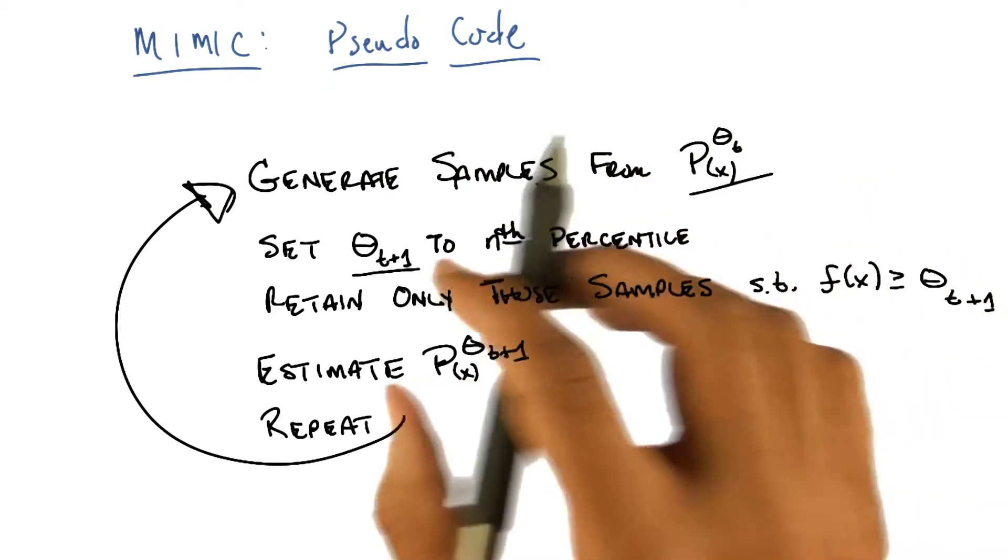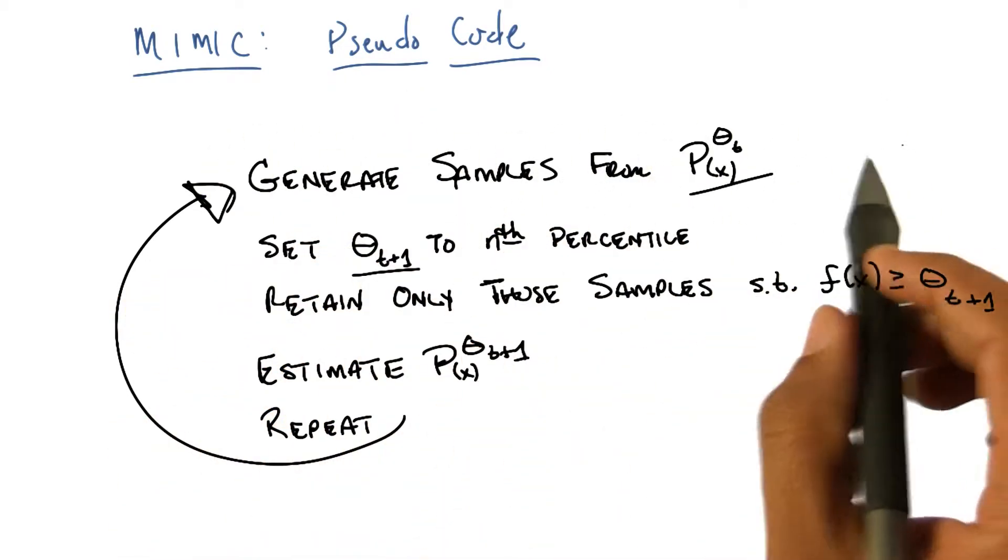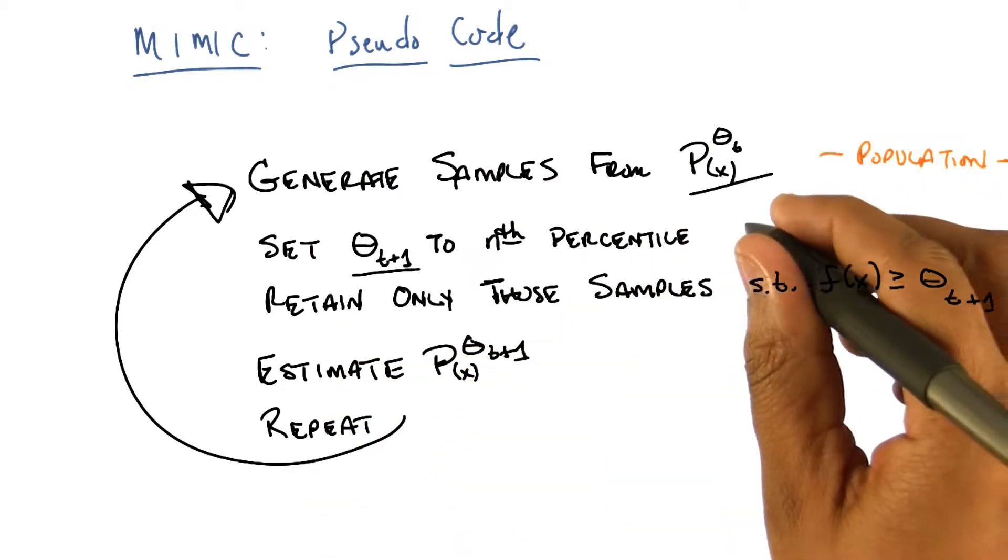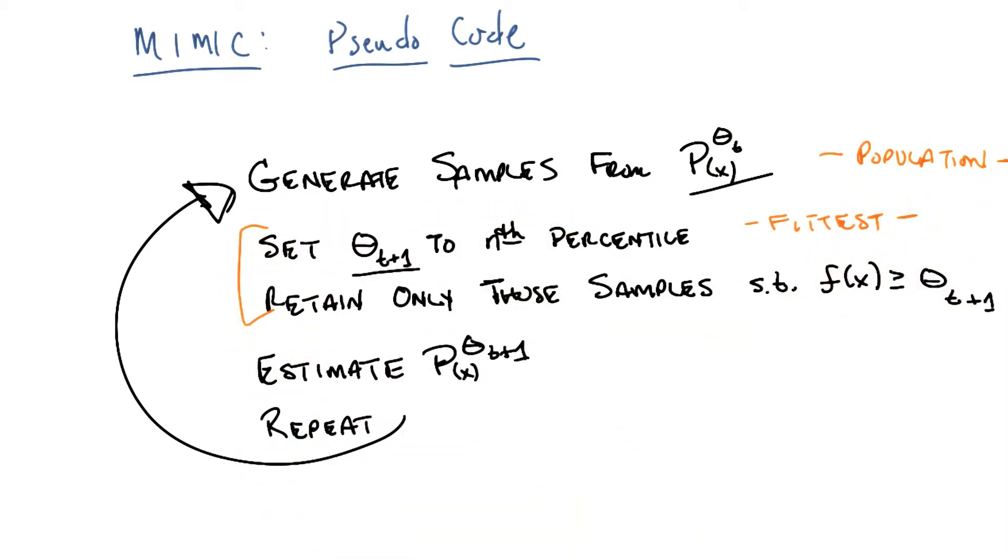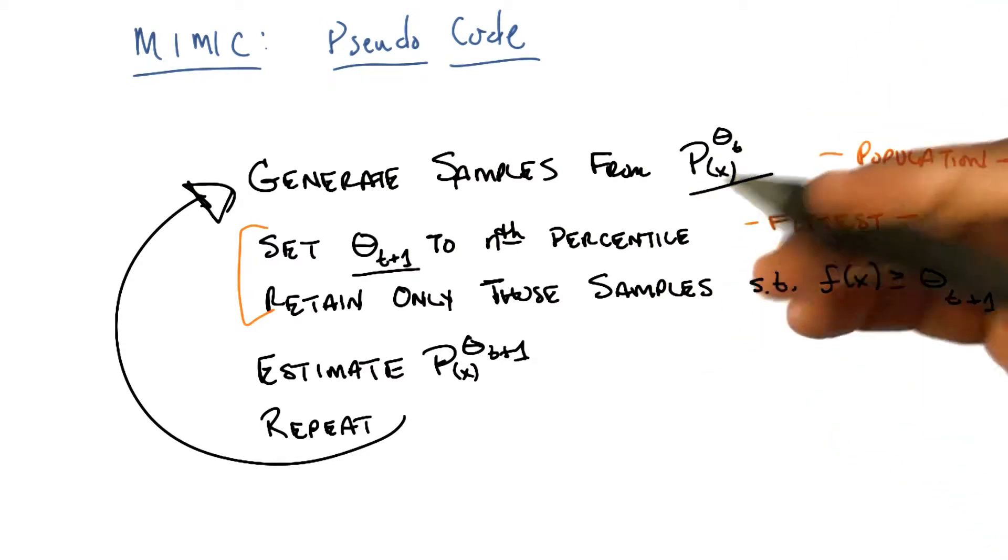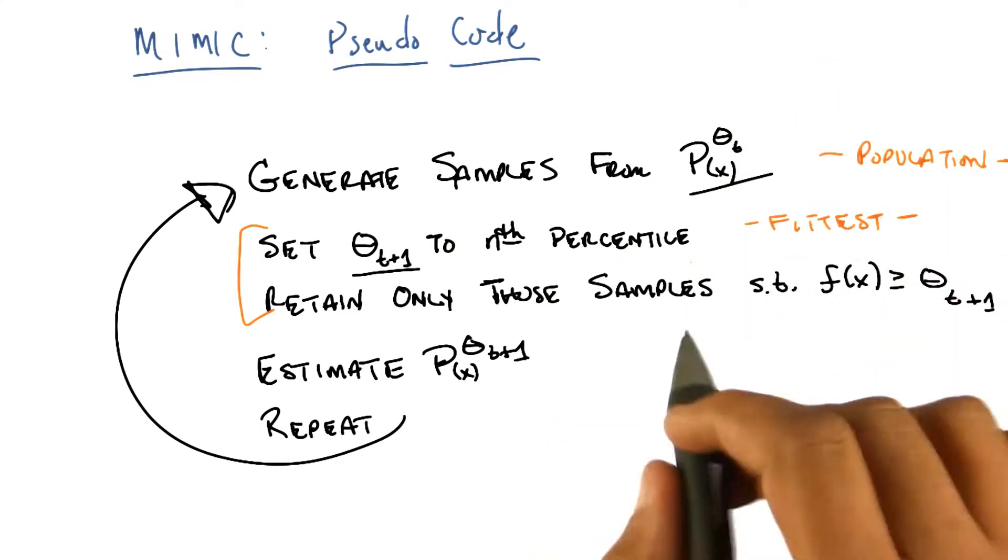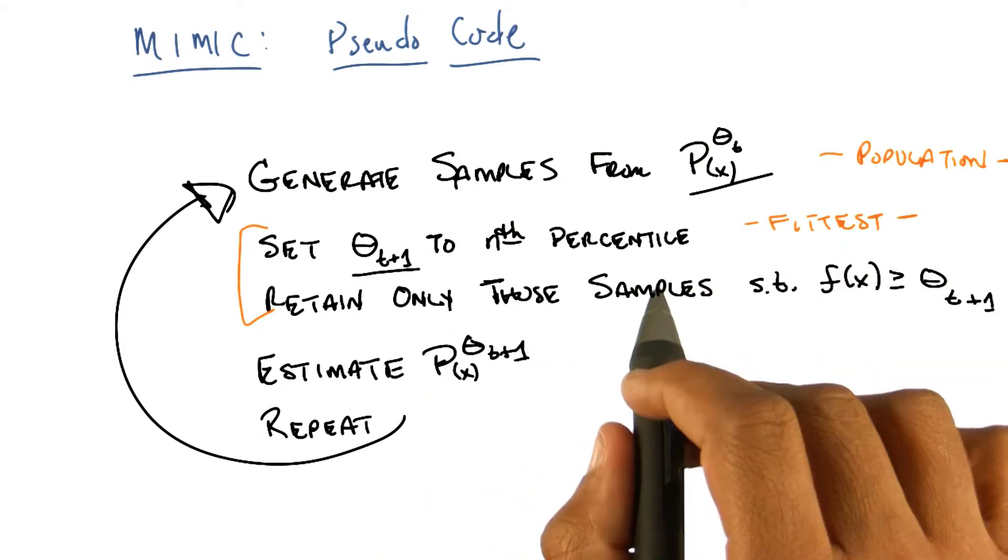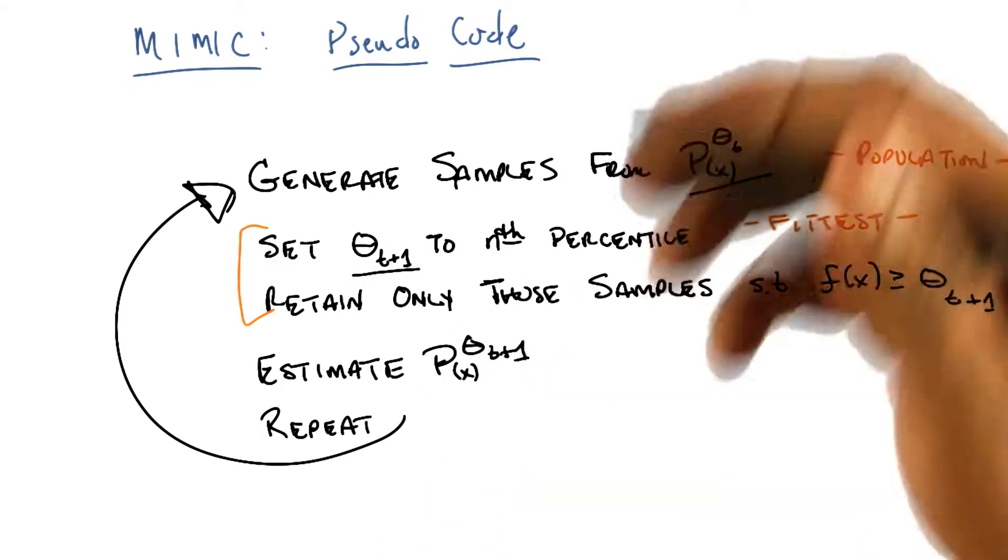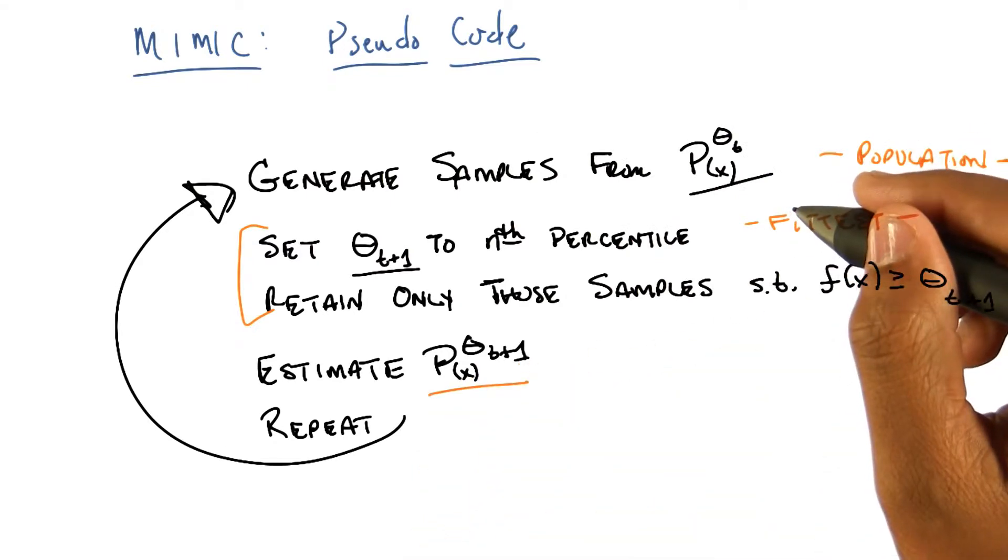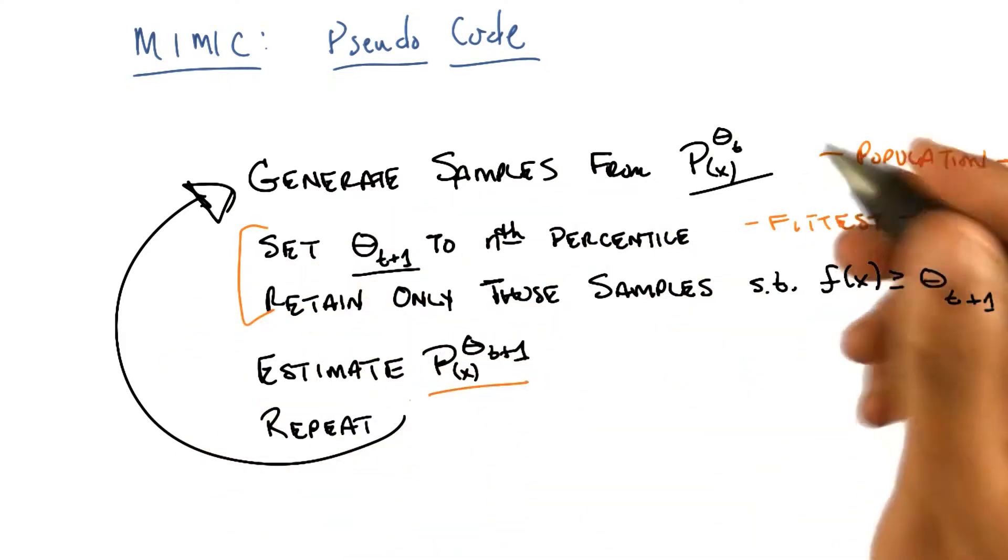Except instead of having this population that moves from one bit to the other, we generate samples that's like our population. So we generate a population here. We pick the most fit of that population by retaining only those that are the best ones. But let's just stick to the simple case where you take the best ones. And now that we've got this new population, rather than using that population again, we estimate a new distribution that's consistent with those. And then we just lather, rinse, repeat, until we come to some convergence.